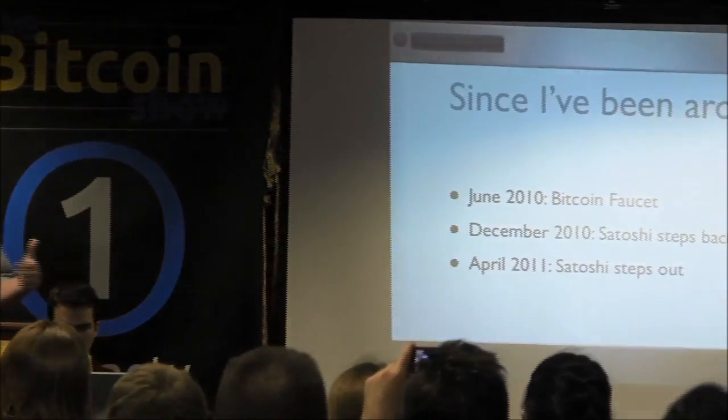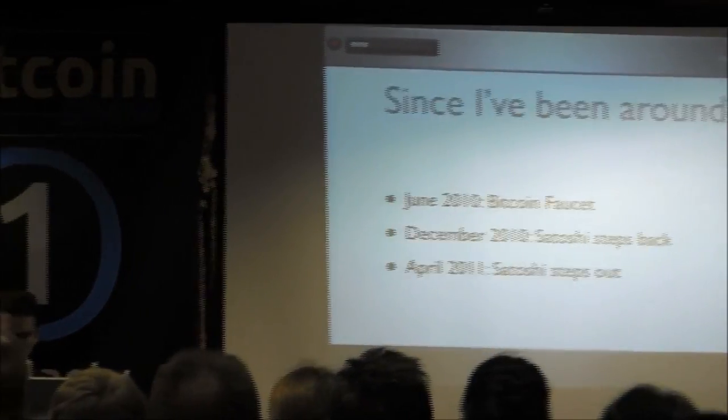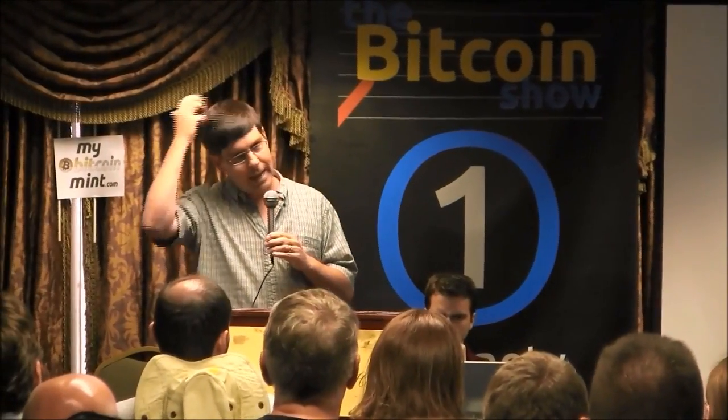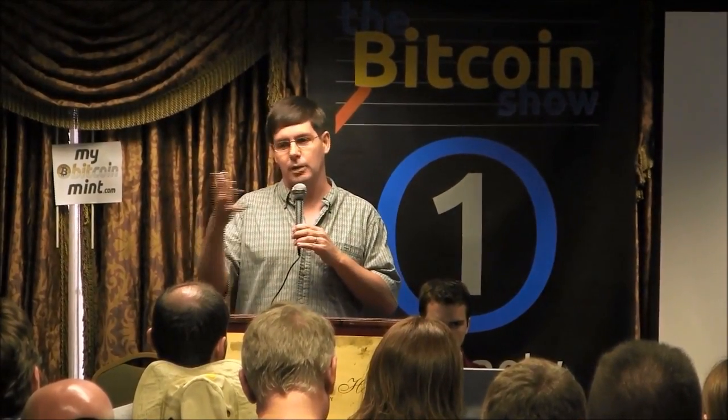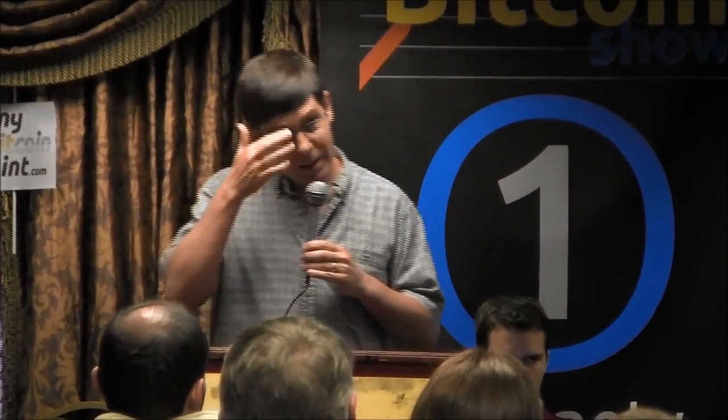All the way through December 2010, Satoshi started to step backwards, and he did it in an interesting way. He sent me an email and asked if it would be okay to put my email address as one of the people to contact on the Bitcoin.org homepage. I said sure, and at the same time he took his own email address away — which I didn't expect — but I think it was his way of pushing me forward. The last email I got from Satoshi was in April of 2011.